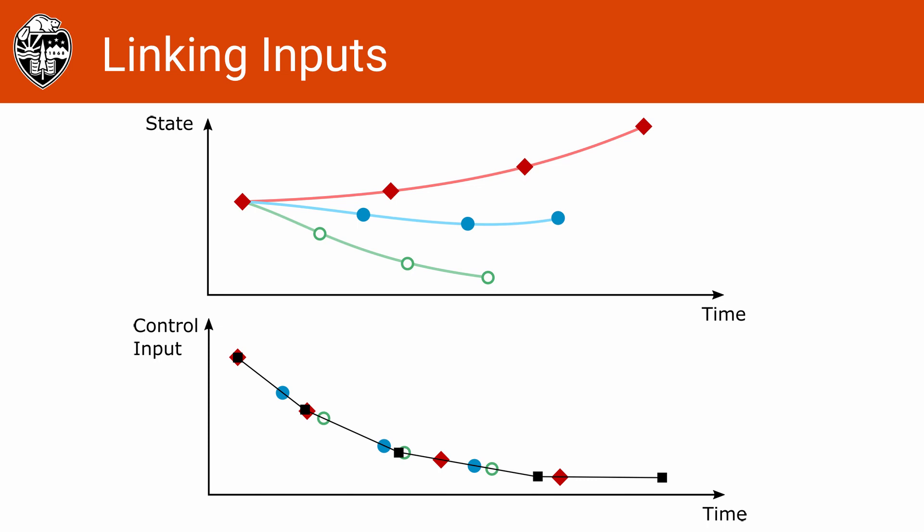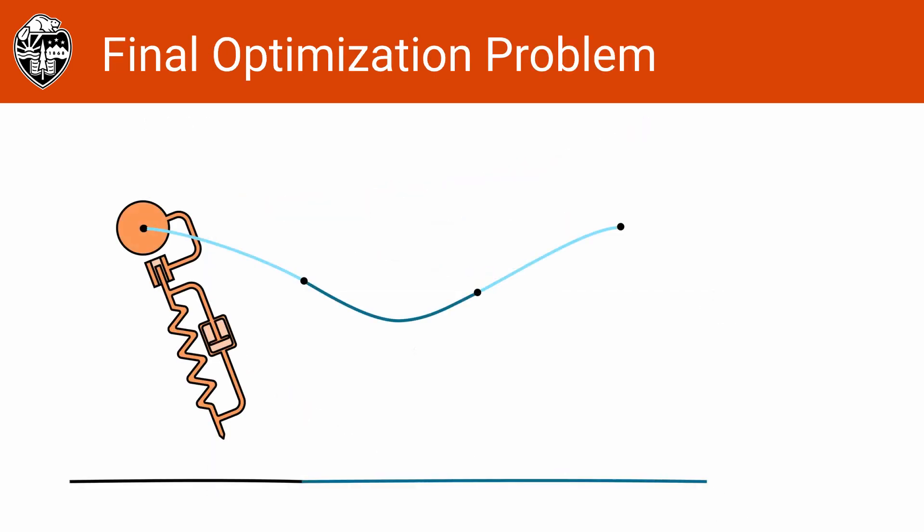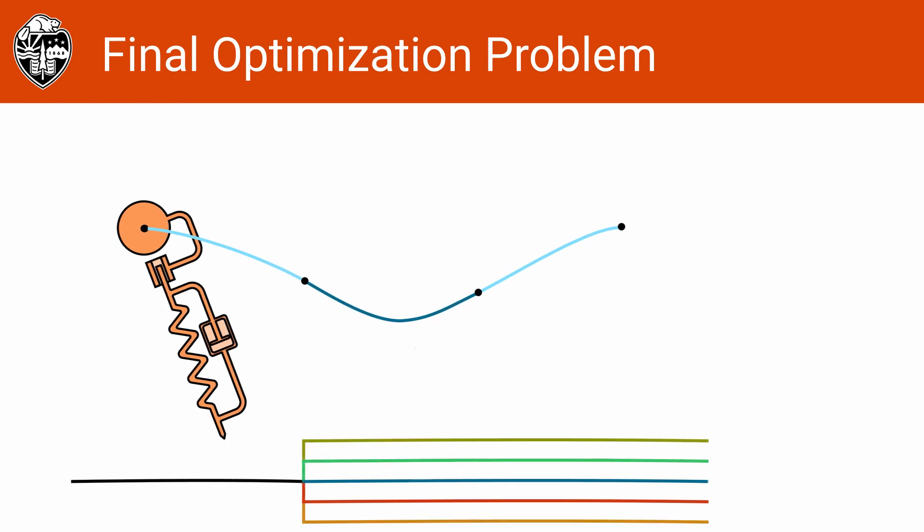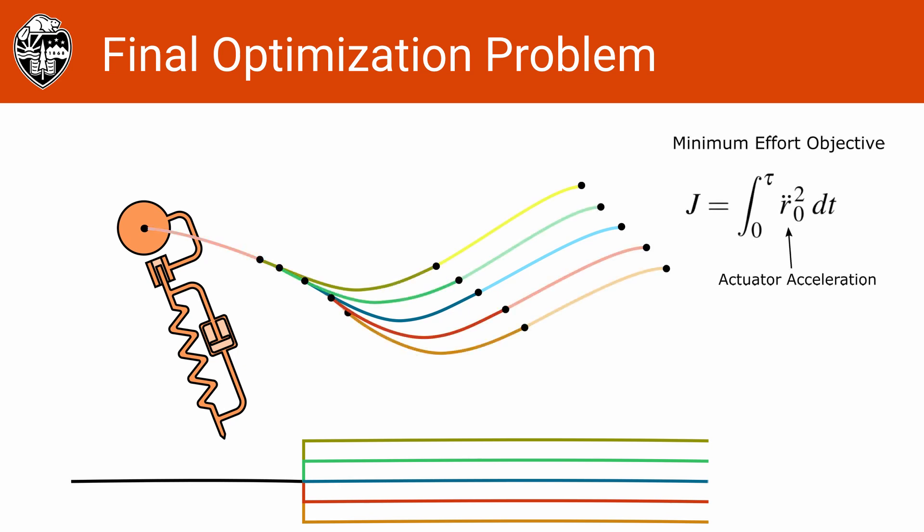For details on the specific constraint and its Jacobian, please take a look at our paper. The final problem that we solve is to optimize for five ground heights: nominal, plus and minus 0.05 times the nominal leg length, and plus or minus 0.1 times the nominal leg length. Specifically, the solution is constrained to exactly reject the disturbance while minimizing integrated actuator acceleration squared.